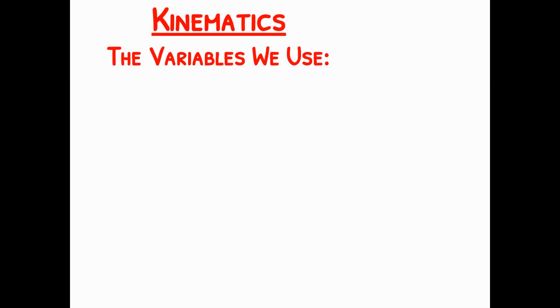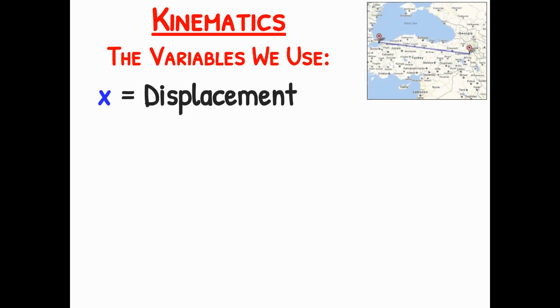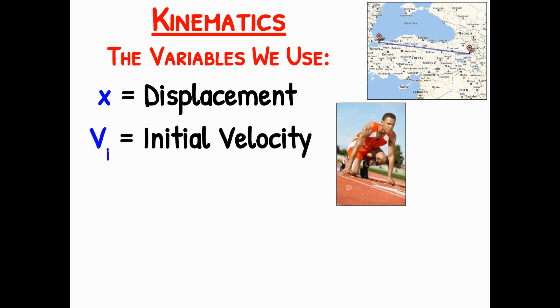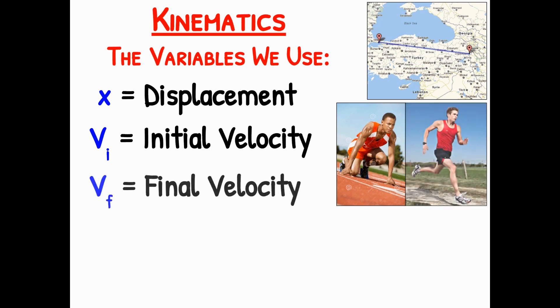So in kinematics, what kind of tools are we going to use? There's a set of five variables, first of which is displacement. What is displacement? Displacement is the distance from your starting point to your ending point. It's how far you got, or as the crow flies. VI is another variable used in kinematics. It stands for initial velocity. It's how fast something is moving at the start of its journey. VF stands for final velocity, and it means how fast you're going at the end of your journey.